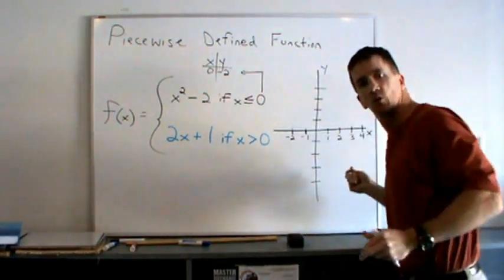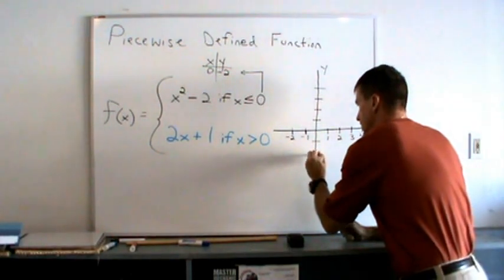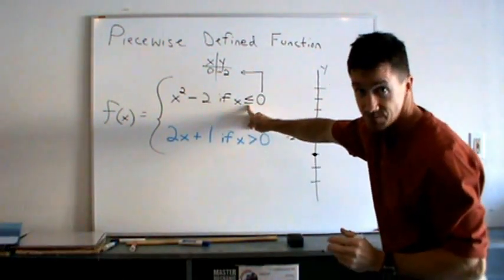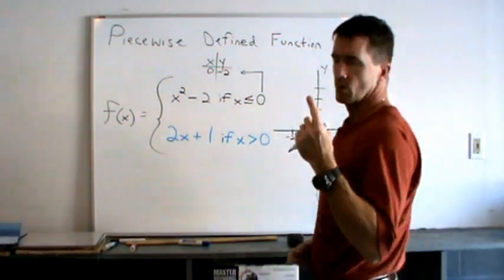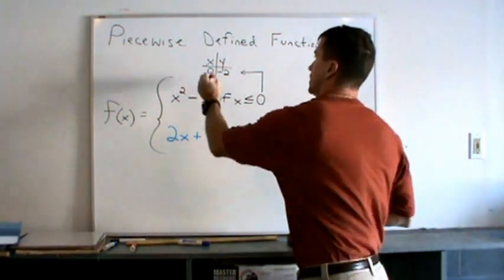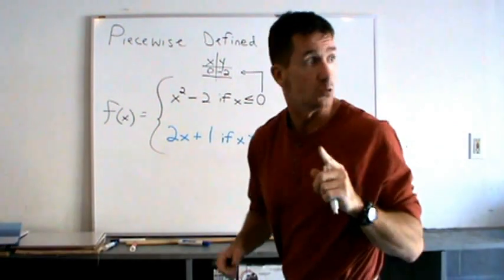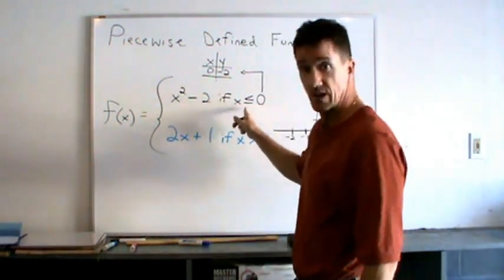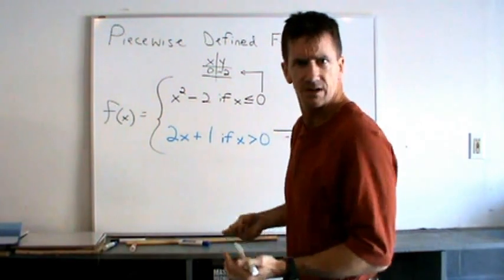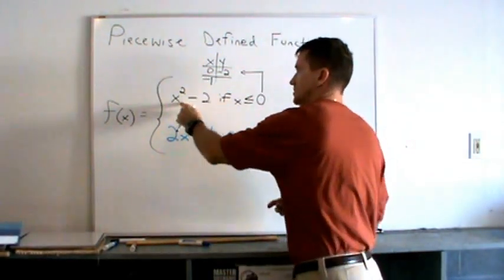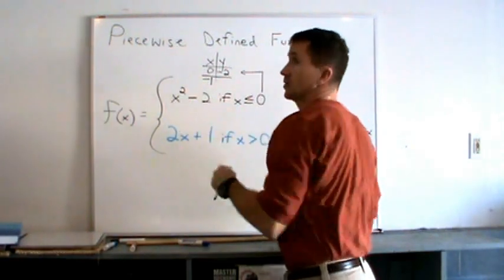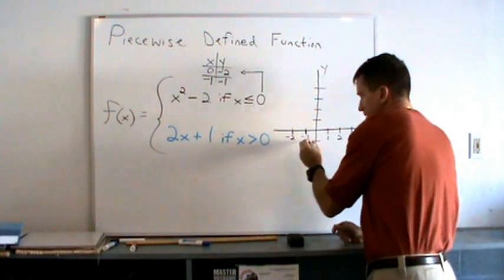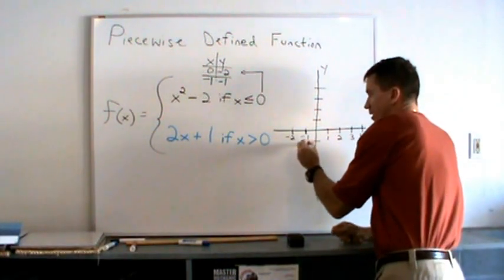I'm going to plot that on the xy coordinate plane right here. I'm going to give it a solid dot because x can equal 0 or less than 0. We need at least one more point though. Make sure don't choose 1, you can only use x less than or equal to 0. Choose negative 1. I'll plug in negative 1, substitute it here. Negative 1 squared is 1, 1 minus 2 is negative 1. So that is located right here at negative 1 and negative 1.